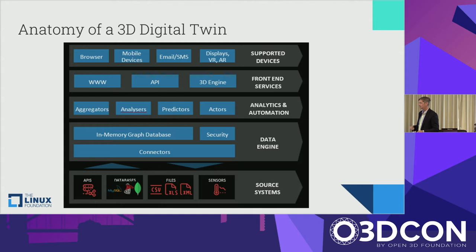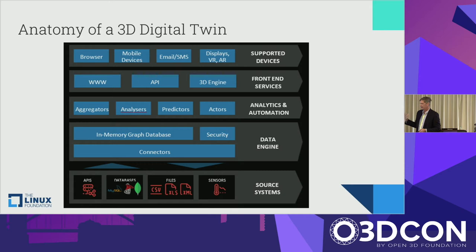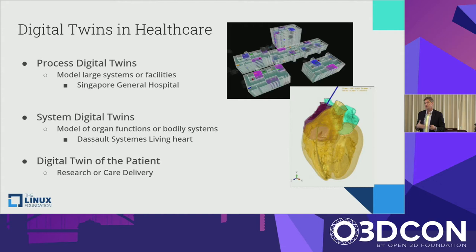This digital twin stack concept, borrowed from a colleague at another digital twin company, breaks down the layers: supported devices including mobile UI/UX, AR and VR; front-end services leveraging internet connectivity, APIs, and 3D engines; analytics and automation; the data engine; and the source systems. I think this also relates to game engine structure and how pieces are assembled to emulate something — whether an avatar or, in this case, a digital twin.